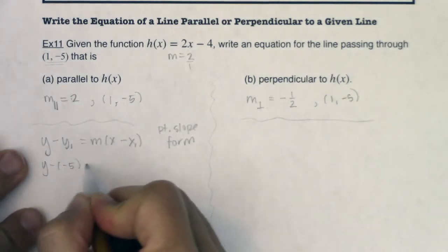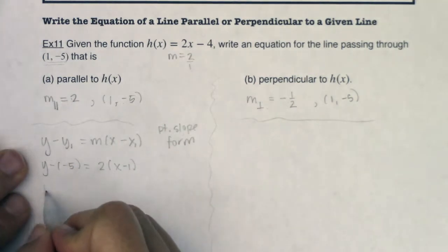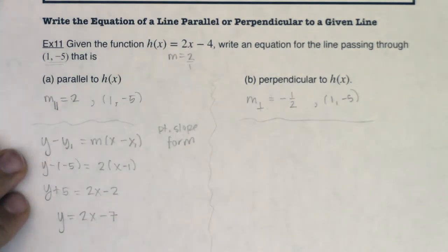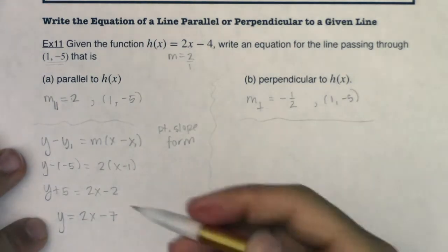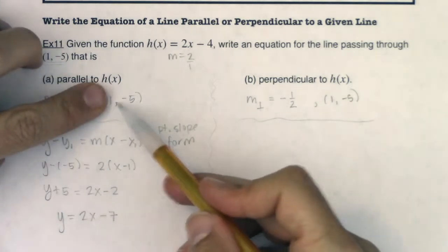y minus negative 5 would be equal to 2 times (x minus 1). So I would have y plus 5 would be equal to 2x minus 2. So ultimately my answer is y is equal to 2x minus 7. And let me just check. The slope is 2. That's great. Does it pass through (1, -5)?